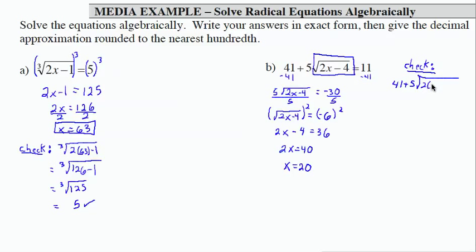So I have 2 times 20 minus 4 underneath the radical. So that gives me 41 plus 5 times the square root of 2 times 20 is 40 minus 4 is 36.